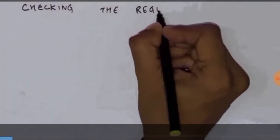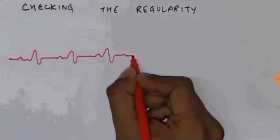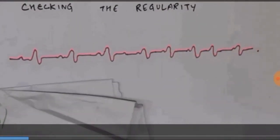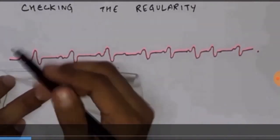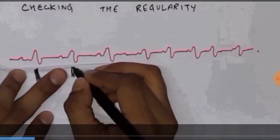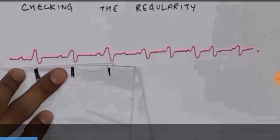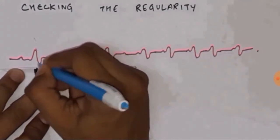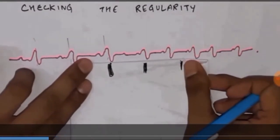Let us try to understand. First, we are going to check the regularity. So, how are we going to do that? Let us take an ECG as an example. We are going to take a paper and mark with a marker corresponding to every QRS complex. And we are going to move this piece of paper like this.